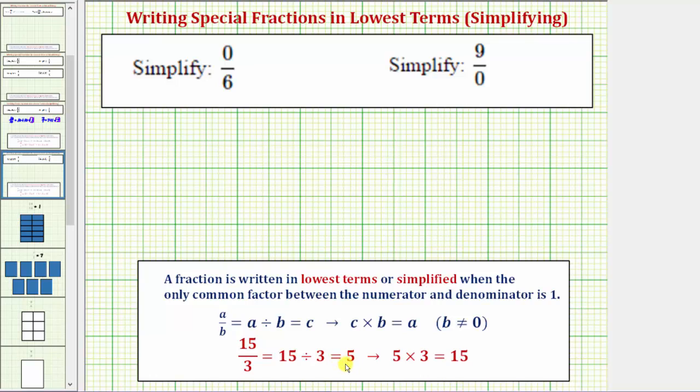And for every quotient there's a corresponding product. Because 15 divided by three equals five, we also know five times three equals 15.